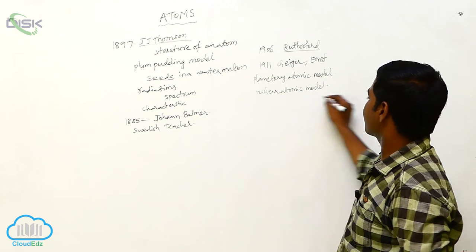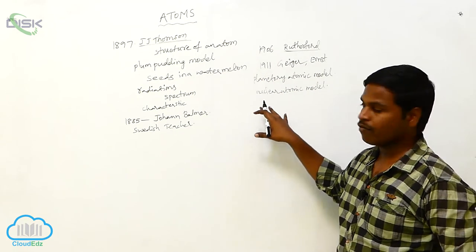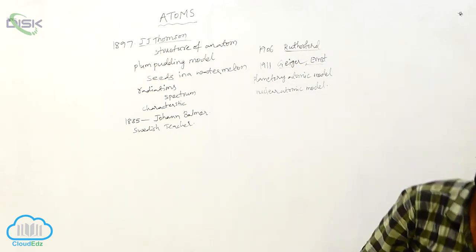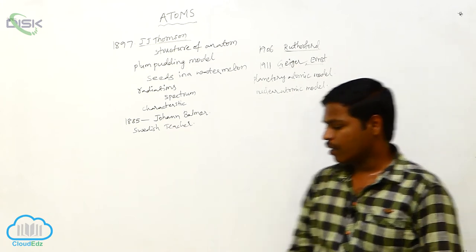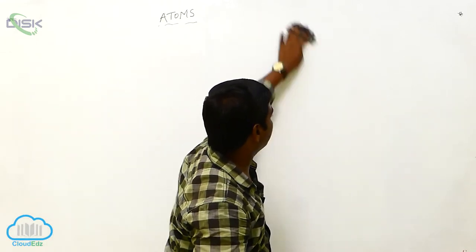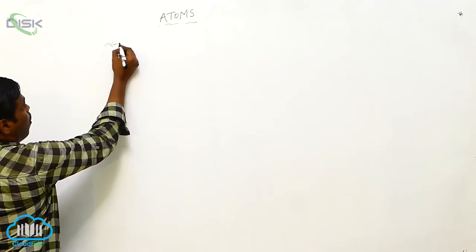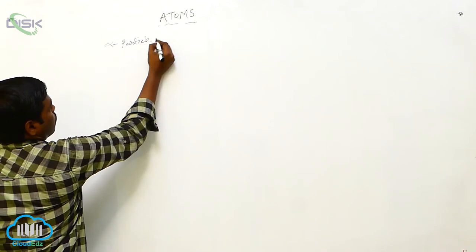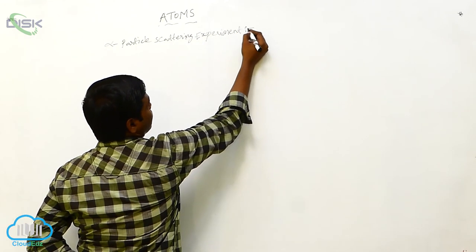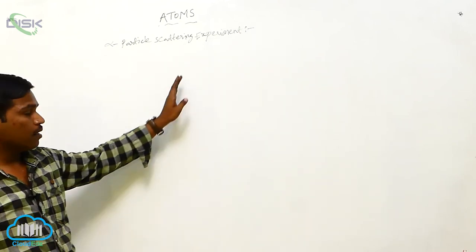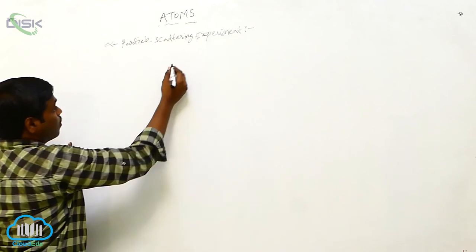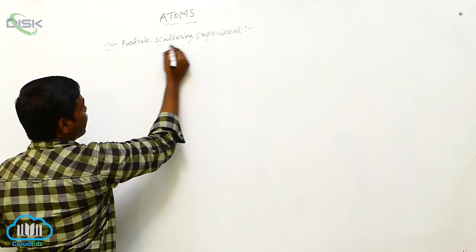This is about how we got the structure of the atom. The alpha particle scattering experiment was given by Rutherford and conducted by Geiger and other scientists. According to this alpha scattering experiment, he obtained the nuclear atomic model for the structure of the atom.